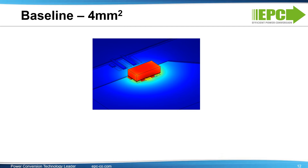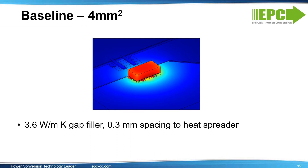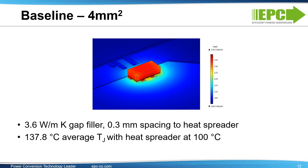Here's our baseline case of a system with a heat sink. We're taking a 4 square millimeter die and adding a 3.6 Watt per meter Kelvin gap filler. We're locating the heat sink 0.3 millimeters above the die with gap filler in between. We get a result of 6.3 degrees C per Watt at 6 watts of dissipation. From this thermal diagram, you can see that the highest point temperature is approximately 138 degrees centigrade, with the heat spreader set at 100 degrees C, or a total rise of 38 degrees C with 6 watts of power.